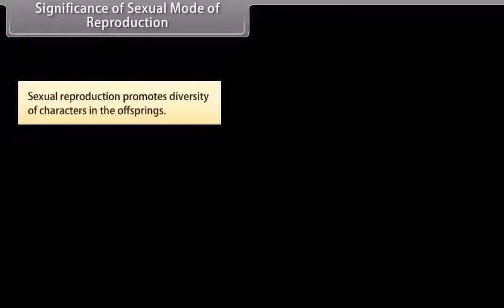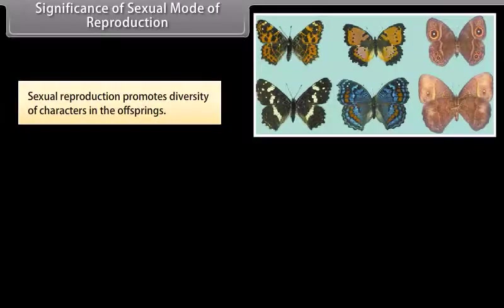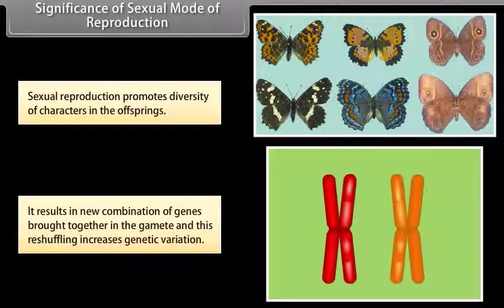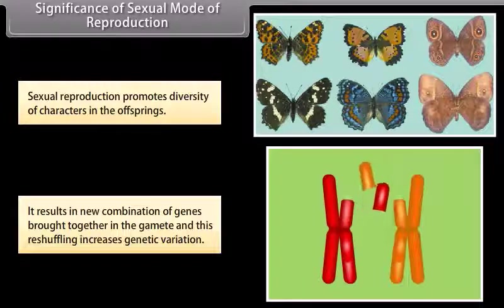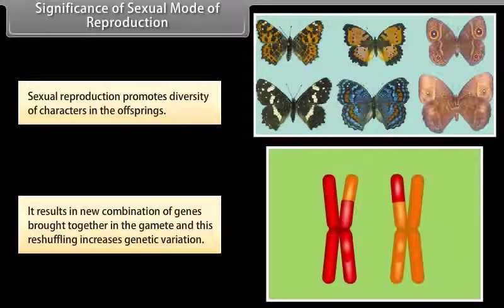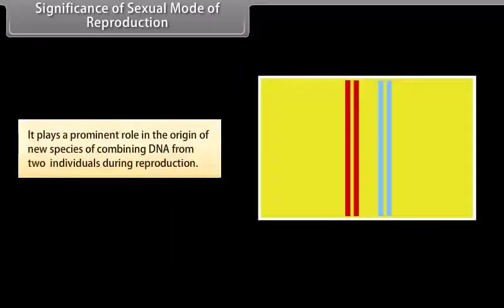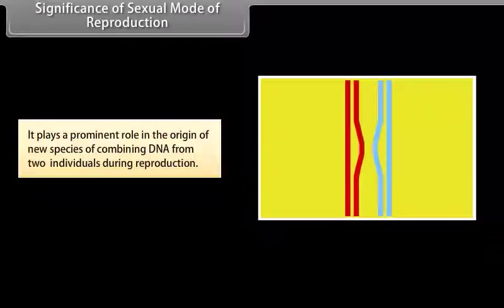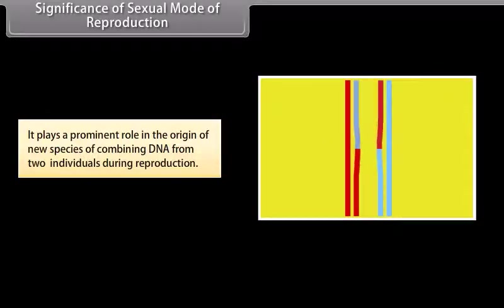Sexual reproduction promotes diversity of characters in the offspring. It results in new combinations of genes brought together in the gamete, and this reshuffling increases genetic variation. It plays a prominent role in the origin of new species by combining DNA from two individuals during reproduction.